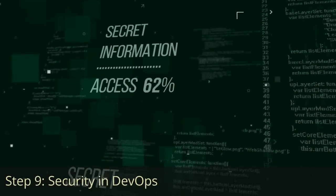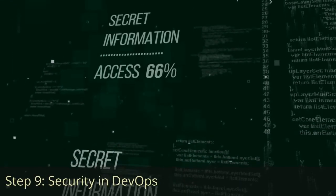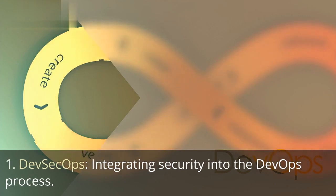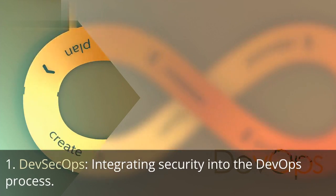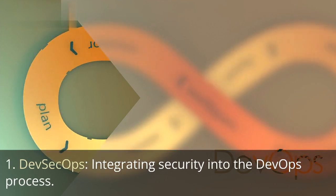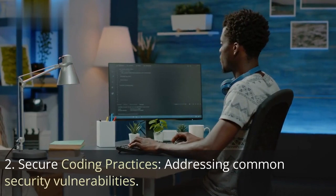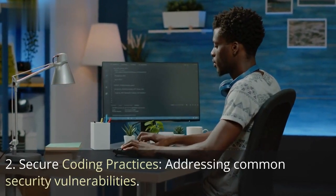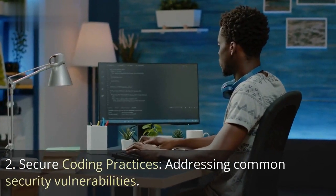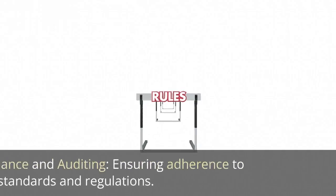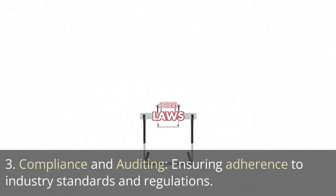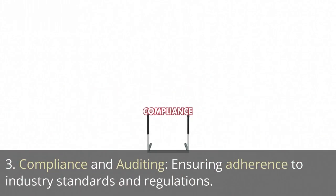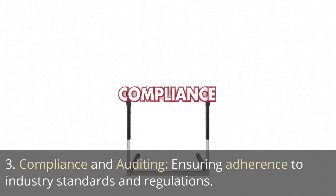Step 9: Security in DevOps. First, DevSecOps — integrating security into the DevOps process. Second, Secure Coding Practices — addressing common security vulnerabilities. Third, Compliance and Auditing — ensuring adherence to industry standards and regulations.